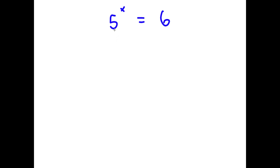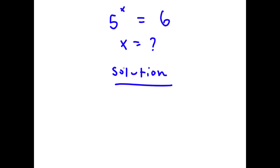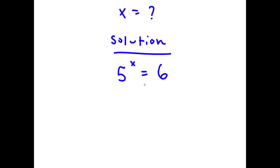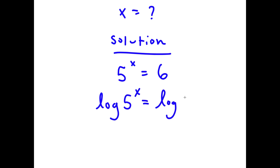In this problem, I have 5 to the power of x is equal to 6. So obviously, I want to find the value of x. For my solution, I start with 5 to the power of x equals 6, and I'm going to take the log on both sides. So now I have log of 5 to the power of x is equal to log 6.